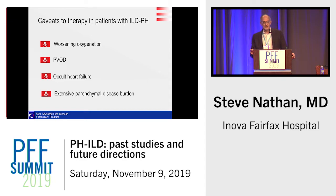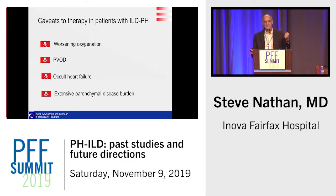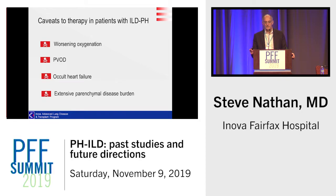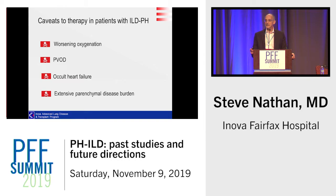Caveats to empiric therapy: theoretically you can worsen VQ mismatch and worsen oxygenation. Pulmonary veno-occlusive disease — if there's fibrosis around the venous-side vessels, you can cause backflow by putting patients on a drug that increases RV output, so PVOD-like lesions can occur in ILD. There's a similar concern for occult heart failure. And if you have extensive parenchymal lung disease, it might not be a good idea to dilate the remaining pulmonary vasculature.